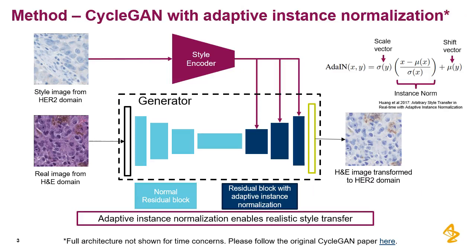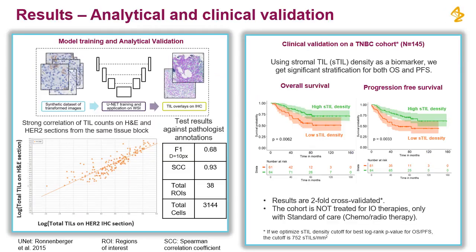The testing of the model will be done directly on IHC images using pathologist annotations. We augment CycleGAN with a style-based generator. The H&E image is used as input to the generator, and an HER2-stained IHC image is passed as a style image through the style encoder, which transforms it into a compressed representation. This compressed representation is added to the decoder part of the generator, enabling realistic transfer of style from H&E to IHC. We use adaptive instance normalization (AdaIN) in the decoder, and apart from these modifications the CycleGAN architecture is kept the same as the original paper.